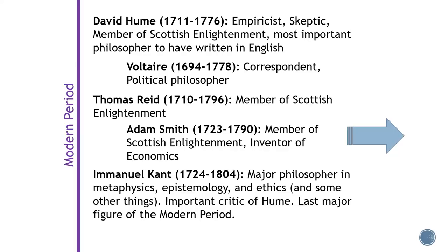Other major later modern thinkers include David Hume, the brightest light of what's called the Scottish Enlightenment — a whole collection of people coincidentally living in Scotland together, talking and working. Along with Hume, you have Thomas Reid and Adam Smith, who wrote The Wealth of Nations and basically invented economics. So economics splits off from philosophy. Also in the Scottish Enlightenment is James Watt, inventor of the steamship — watts are named after him. Immanuel Kant is, in a lot of ways, the last major figure of the modern period. He contributed to pretty much every branch of philosophy and even some other fields, and he died in 1804, so it's easy to round off the modern period at around 1800.